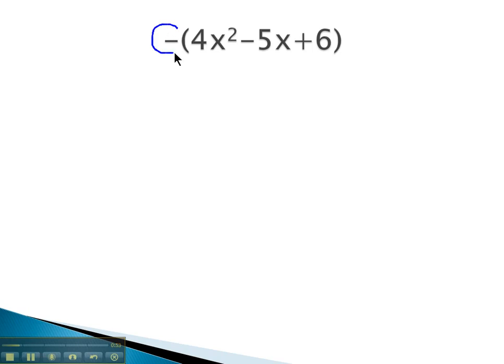We've got this negative sign or subtraction sign. It also means opposite, meaning we're taking the opposite of the polynomial. That opposite sign has to go on to each term, taking the opposite of 4x². Well, right now, that 4x² is positive. So when we take the opposite, it's now negative 4x².